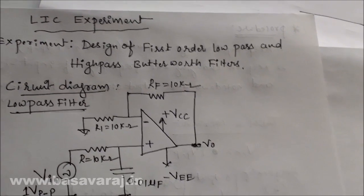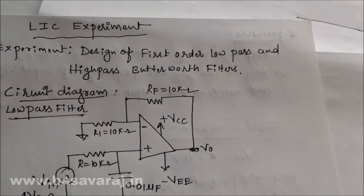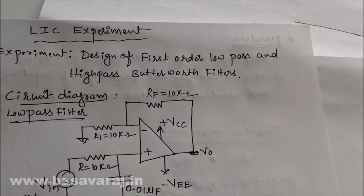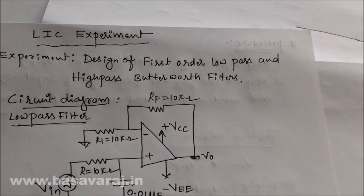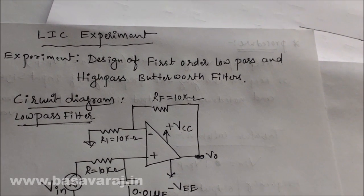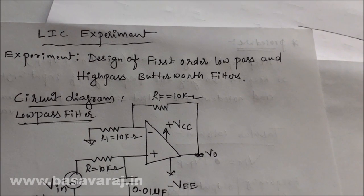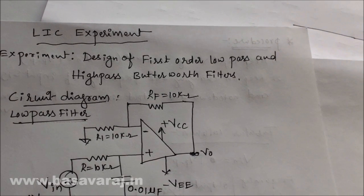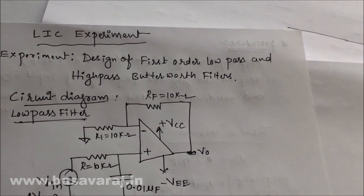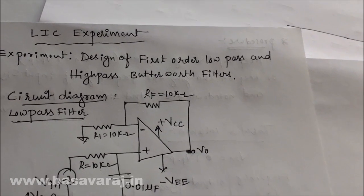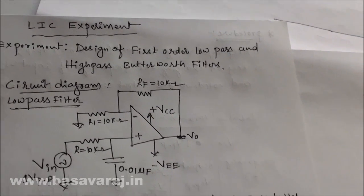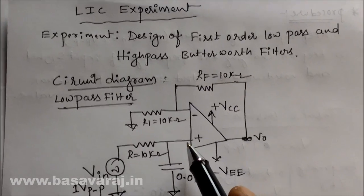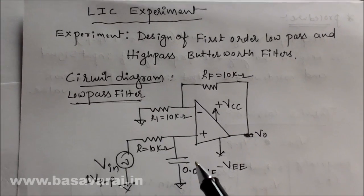This experiment is a design of Butterworth filters. There are two types of Butterworth filters in our syllabus: low pass and high pass Butterworth filters of first order and second order. For our experiment, we are going to design a first order low pass and first order high pass Butterworth filter. This circuit diagram is for a first order low pass filter.